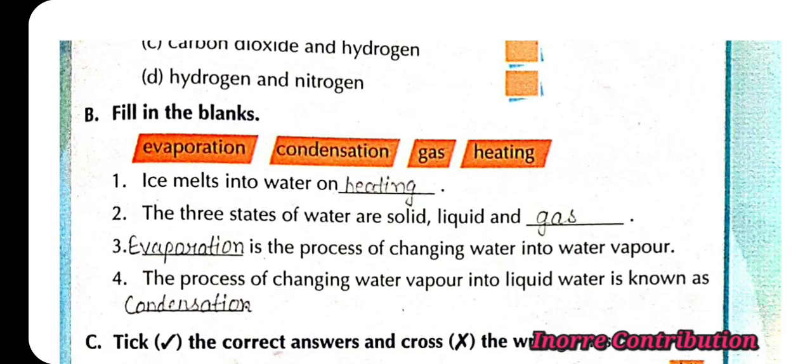B, fill in the blanks. First, ice melts into water on heating. Second, the three states of water are solid, liquid, and gas. Third, evaporation is the process of changing water into water vapor.